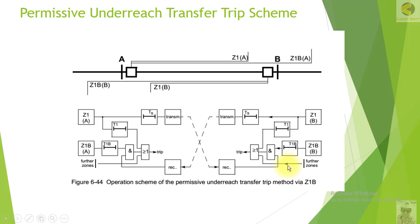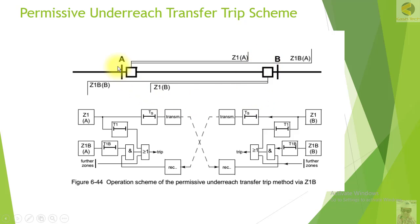Looking at the logic diagram for Station B: if the relay picks up in Zone 1, it gives a trip signal after a time delay of T1, which is normally zero milliseconds — instantaneous. Because of the OR gate, Station B trips the breaker instantaneously and sends a permissive signal with time delay Ts, also set to zero milliseconds normally, transmitting the signal to the remote end.